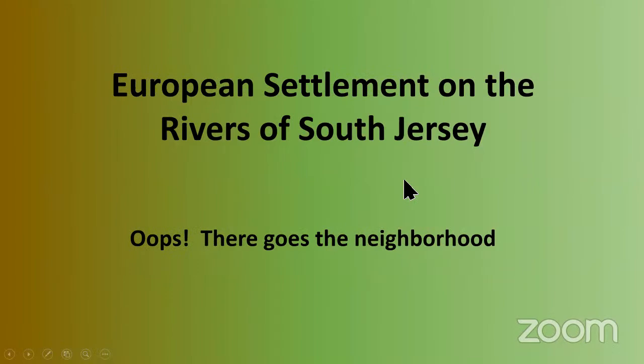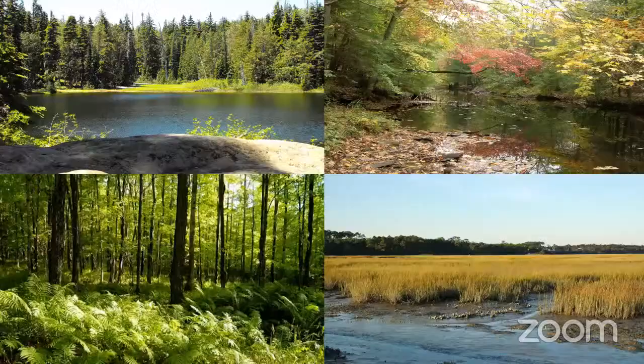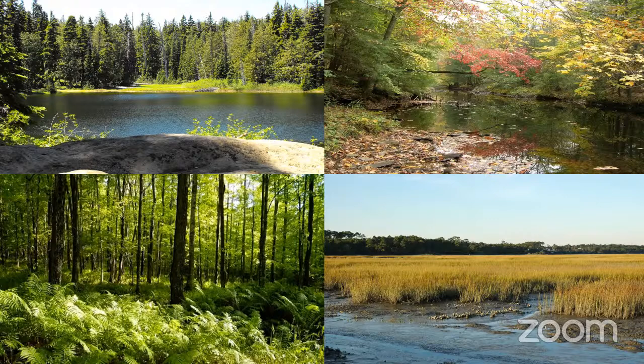When Europeans settled in New Jersey, they wanted to reestablish what they had in Europe. They were used to streams for mills and for farming, and had already established laws on what you could do with rivers. So there was a technological heritage and a legal heritage they brought with them. These are miscellaneous pictures showing what a natural environment would have looked like before European alteration — essentially pre-settlement South Jersey, a forested area full of rivers and swamps.